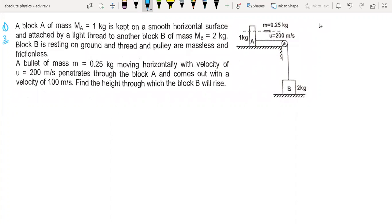The mechanics problem: Block A of mass 1 kg is kept on a smooth horizontal surface, attached by a light thread to another block B of mass 2 kg. Block B is resting on the ground and the pulleys are massless and frictionless.